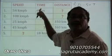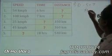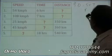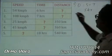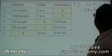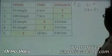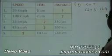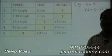Replace the values into the formula. Speed is 54 kilometers per hour and time is 6 hours. Therefore, 6 × 54 = 324 kilometers. So, 324 kilometers is the distance.